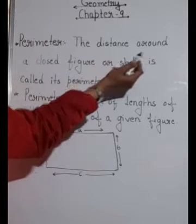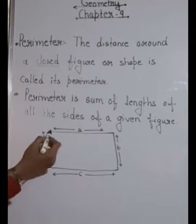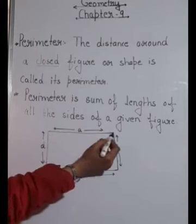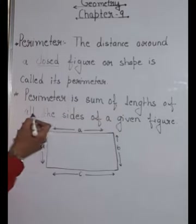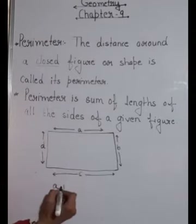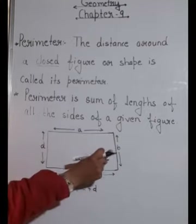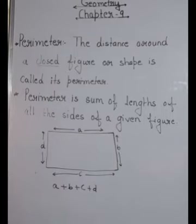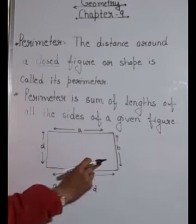The next topic is perimeter. What is perimeter? The distance around a closed figure or shape is called the perimeter. I have drawn a four-sided figure here - a quadrilateral - with sides labeled a, b, c, and d. Perimeter is the sum of the lengths of all the sides of a given figure. In simple language, the sum of boundaries is known as your perimeter.